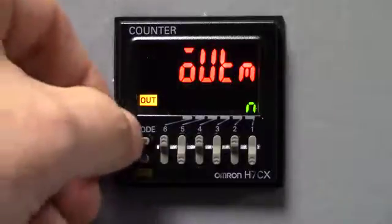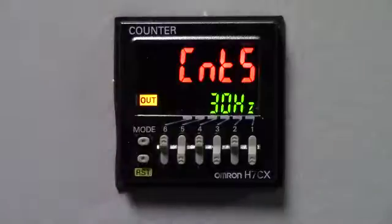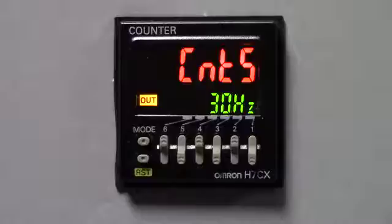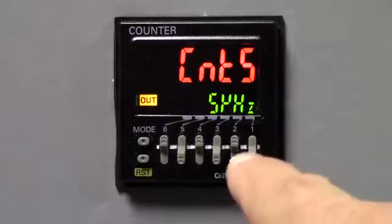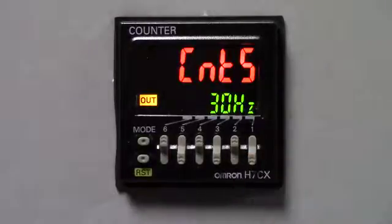The next mode is CNTS. This is the counting speed. There's two speeds to choose from. There's 30 Hertz and 5 kilohertz. Because we are going to be using a push button for our input, we're going to keep it at 30 Hertz. And now we're going to advance to the next mode.